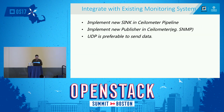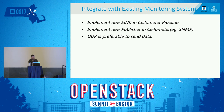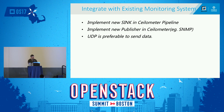For integrating with existing monitoring systems, our approach is to use the Ceilometer pipeline to fit the format of the existing monitoring system. If the existing monitoring system uses SNMP, we can add an SNMP publisher. We think UDP is preferable for sending data — if we use the default configuration with MQ, the meter data may cause the message queue to block.